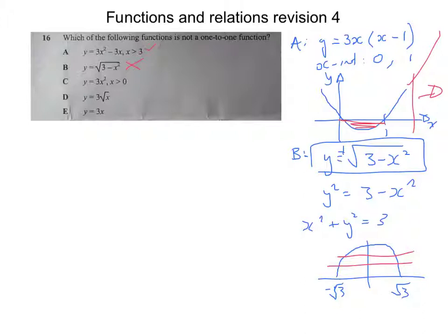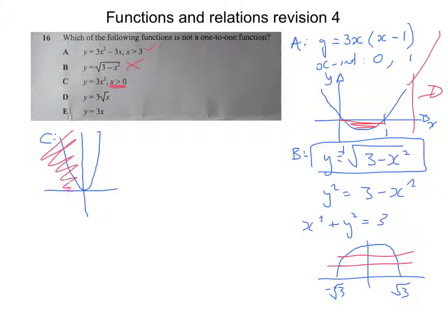There may be more than one option, so we go through the rest. For C, the graph is a positive quadratic 3x squared. As it stands it is not one-to-one, but we have a restricted domain of x greater than 0, so we ignore the left part and only look at the right part, which is a one-to-one function. For D, the graph of 3 root x has an implied domain restriction — no negative x values — so that section is definitely one-to-one.